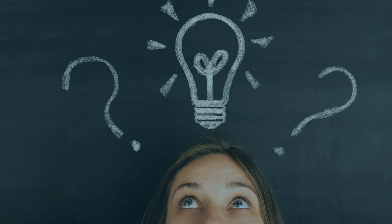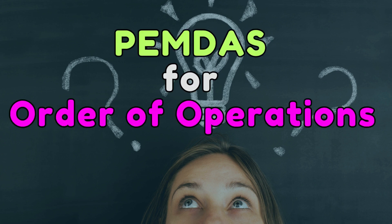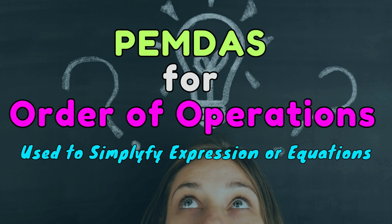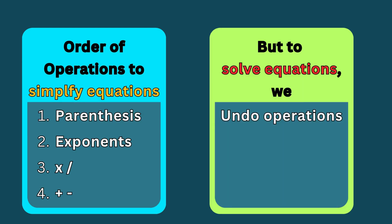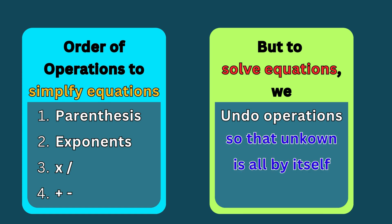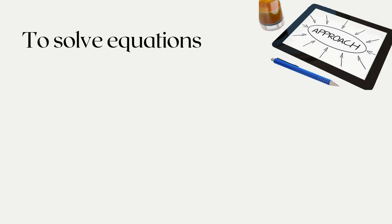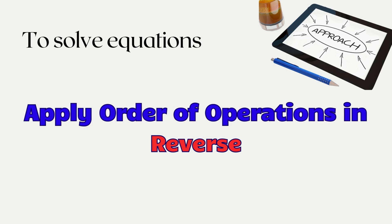You've probably heard of PEMDAS — parentheses, exponents, multiplication, division, addition, subtraction. Those are the rules you follow when simplifying mathematical expressions or equations. But solving an equation is different, because we are trying to undo any operations that the unknown value is involved with so that the unknown value will be all by itself. Therefore, to solve an equation, the best strategy is to apply those order of operations rules in reverse.